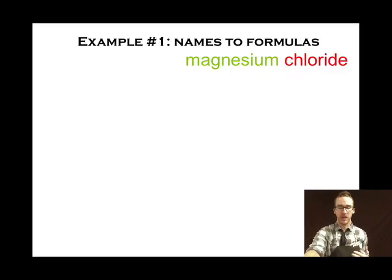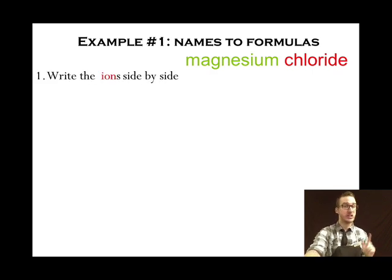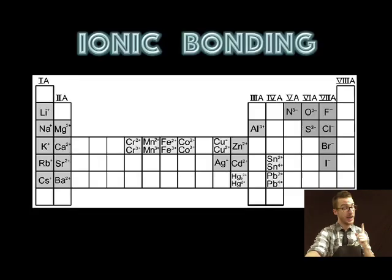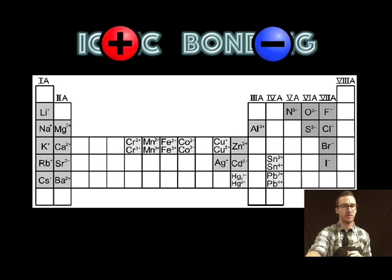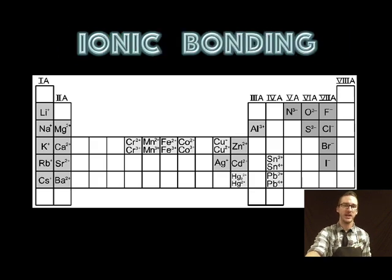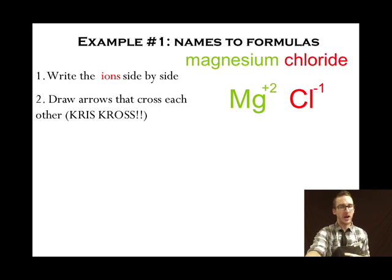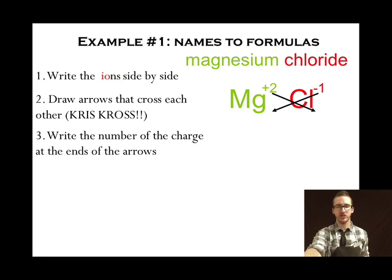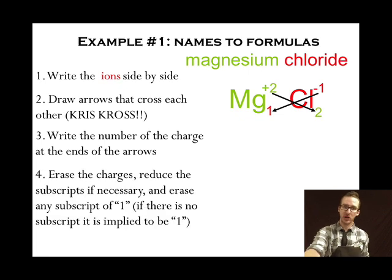Let's take a look at a couple of examples. Magnesium chloride. Step one. Write the ions side-by-side cation first. We've got the magnesium two plus ion and the chloride one minus ion. Again there is a pattern that forms on the periodic table to help you recognize the charges that those ions are gonna form. Step two. Draw arrows that cross each other. Criss-cross. We're gonna write the number of the charge at the end of the arrows. So notice I'm taking just the number not the plus and minus sign. We're gonna erase the charges,